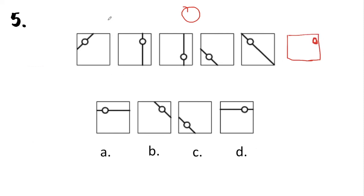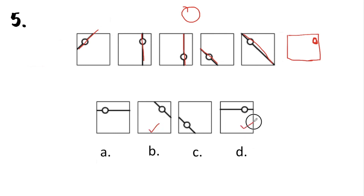Now let's look at the line. The line pattern is: shorter line, then longer line, then longer line, then shorter line, followed by a longer line. So the correct answer should also have a longer line with the small circle at the upper right side of the square. Looking at the choices, the ones with the small circle at the upper right corner are only B and D. Since the line should be a long line, we cannot choose B — that gives us the correct answer, which is letter D.